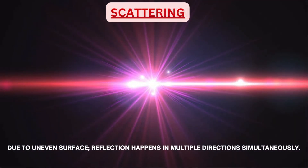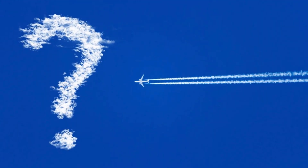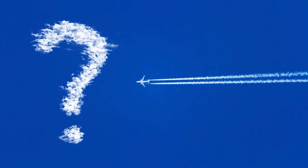Next is scattering. Scattering is somewhat like reflection but here the reflecting surface is not smooth. Due to the uneven surface, reflection happens in multiple directions simultaneously. The color of the sky appears blue due to scattering of light from the earth's atmosphere, with blue light being the most scattered.